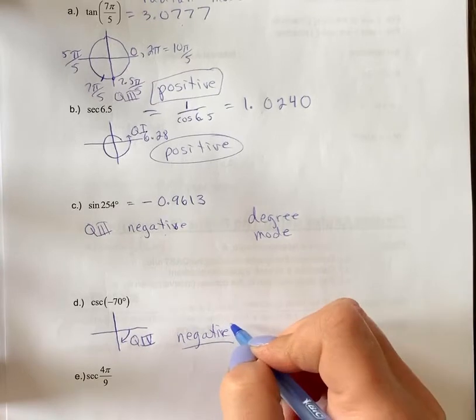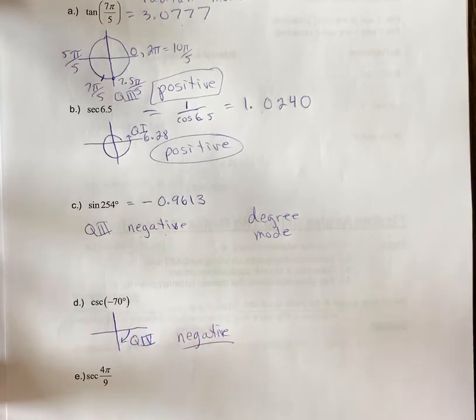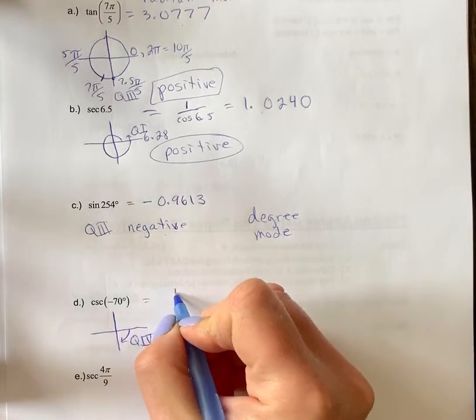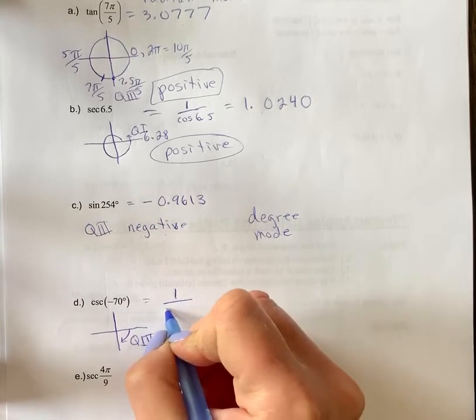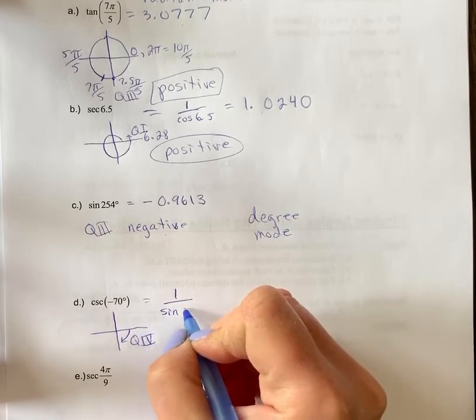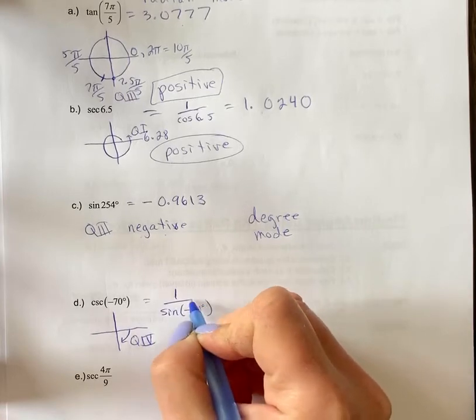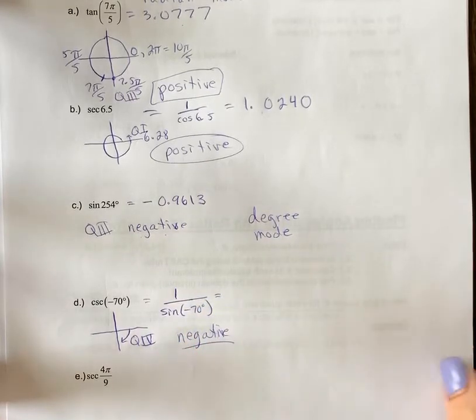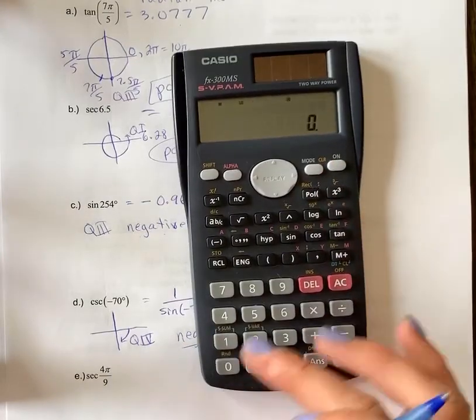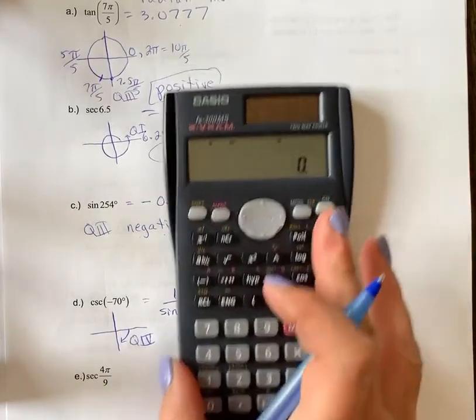So we know that this will give us a negative answer in our calculator. When we're putting this in the calculator, it's 1 over sine and you put the negative sign in there still. So we're going to put that in brackets and make sure that degree symbol is in your work. Make sure again it's in degree mode.